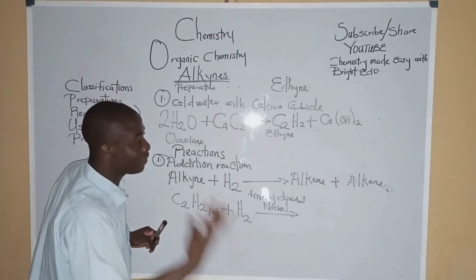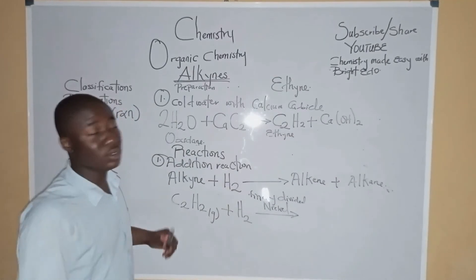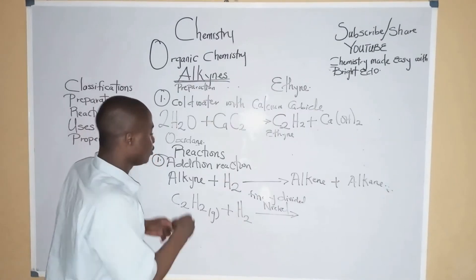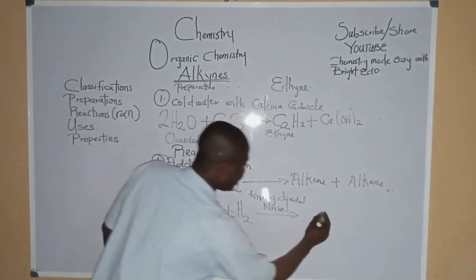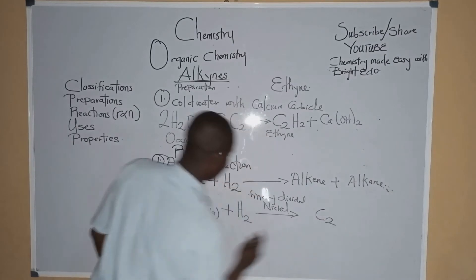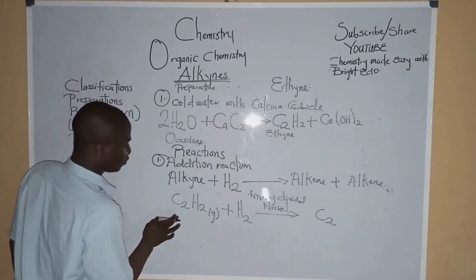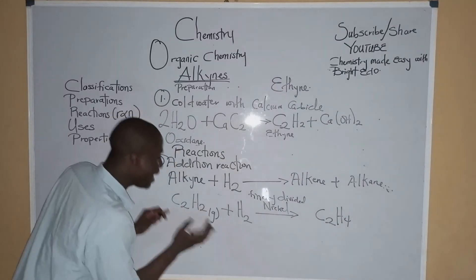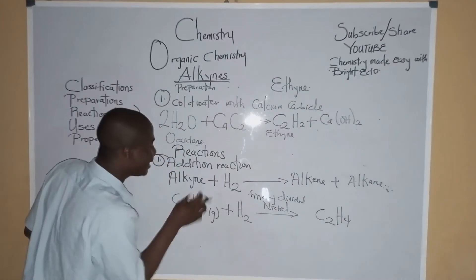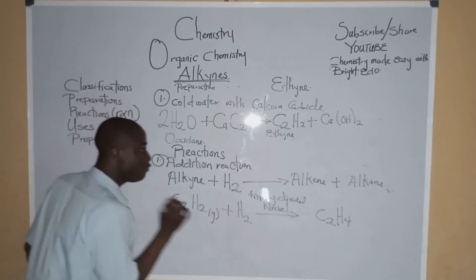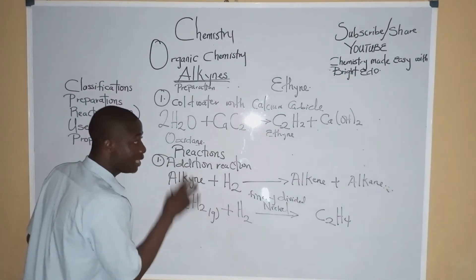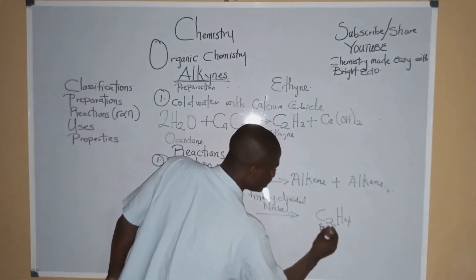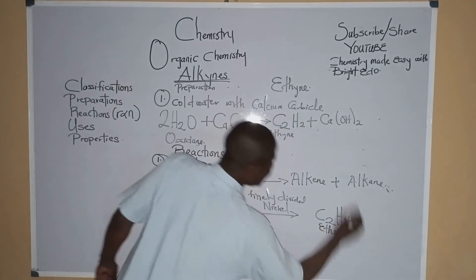Or if we don't use finely divided nickel, we can use catalysts like palladium or platinum. The product we get is C2H4. Whenever hydrogen is added to an alkyne, it forms an alkene. So C2H4 is ethene.